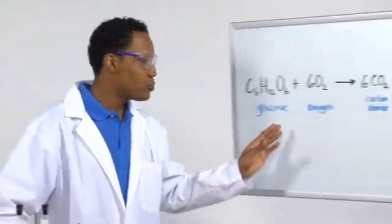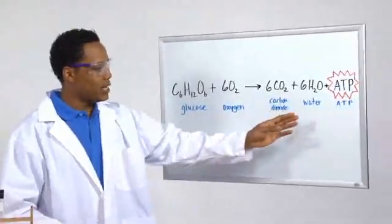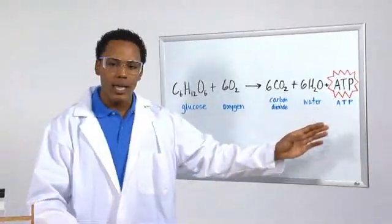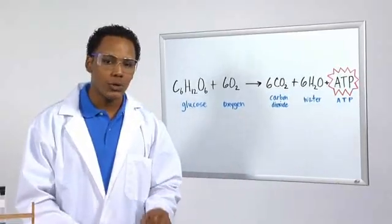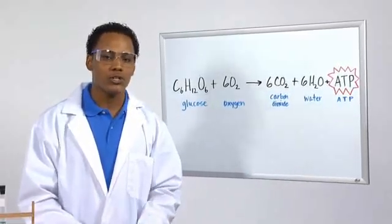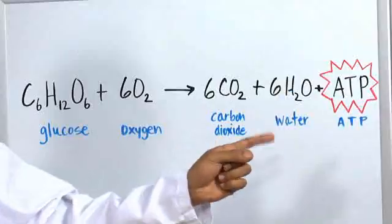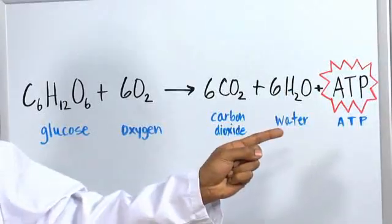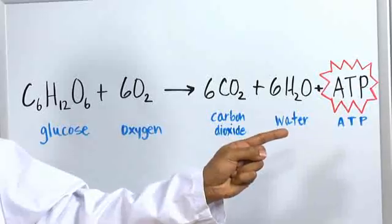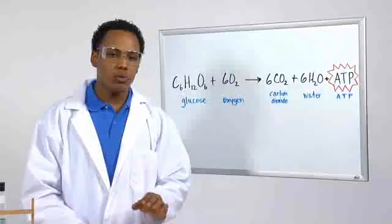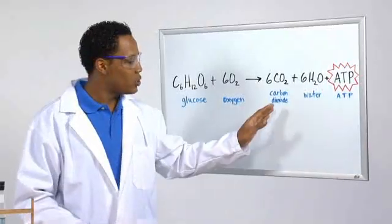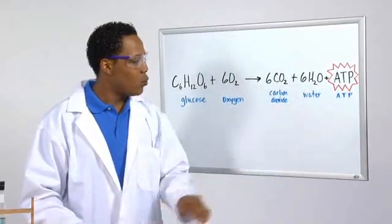When respiration occurs in a plant cell, glucose breaks down to form ATP. In case you're not familiar with the terms, glucose is a type of sugar, and ATP is a chemical that is used as energy within the cell. This process also releases carbon dioxide and water.